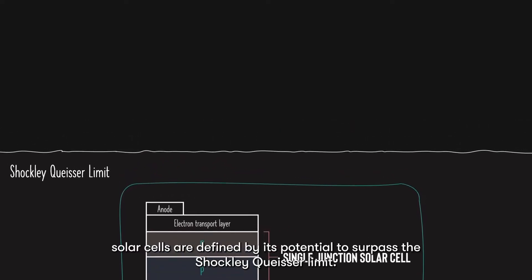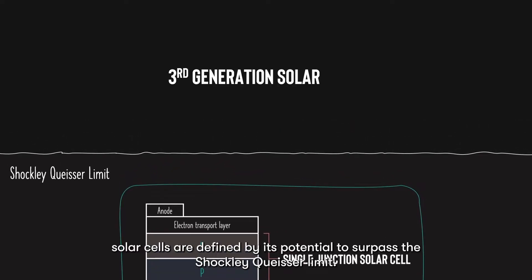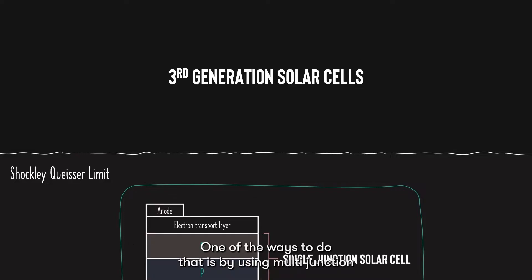Third generation solar cells are defined by their potential to surpass the Shockley-Queisser limit. One of the ways to do that is by using multi-junction solar cells, which is what we are going to talk about in this video.